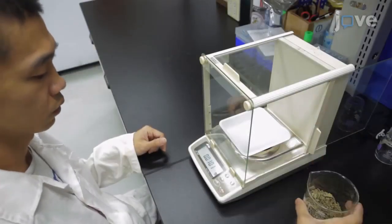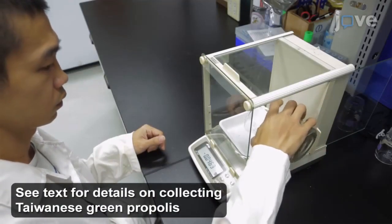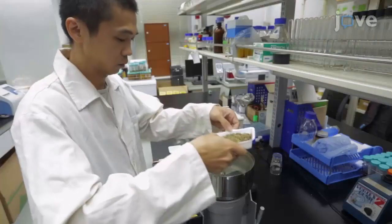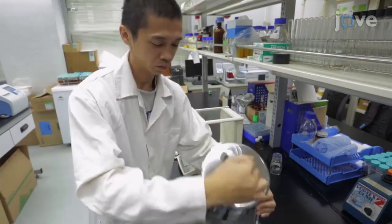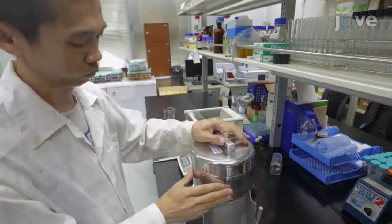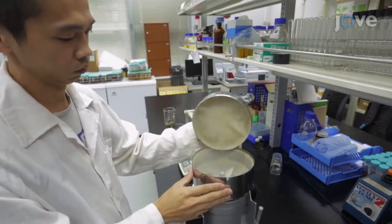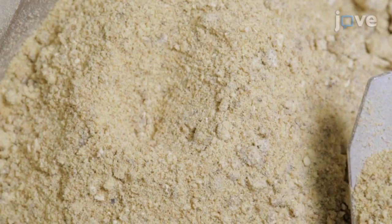To begin, weigh out 100 grams of Taiwanese green propolis. Using a spice grinder, grind the propolis, making sure that the pieces are ground into a fine powder without any large particles.